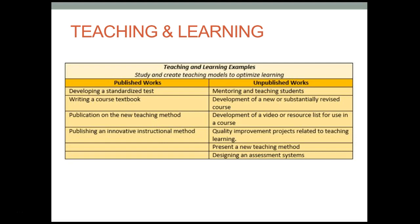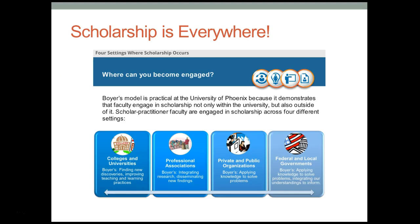The purpose for showing you all of these different examples is to help you reflect on your efforts that you have done or plan to do in the future that can be considered scholarship as they apply to the four different domains of Boyer's. Scholarship is everywhere. The Boyer Model is practical because it demonstrates that faculty engage in scholarship not only within the university, but also outside of it. Scholarship can take place in colleges and universities, but can also be found in professional associations, private and public organizations, and within governmental departments and divisions. Where is it that you conduct scholarship?